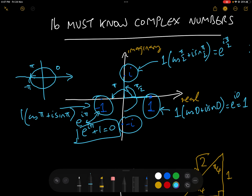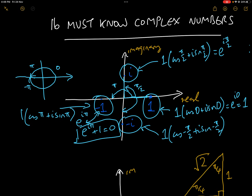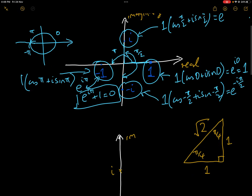The fourth basic number is minus i. Looking at the argument, we go down this way, which is negative, so it is −π/2. Therefore minus i can be written as 1·cos(−π/2) + i·sin(−π/2), or e^(−iπ/2). So those are the four basic ones.